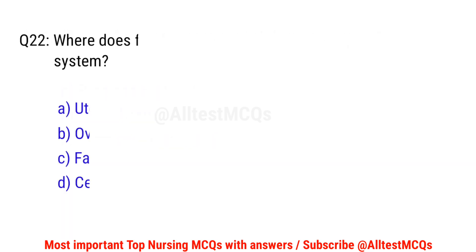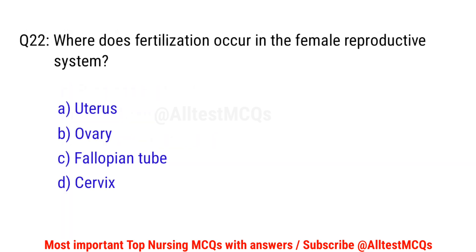Question number 22. Where does fertilization occur in the female reproductive system? The correct option is C: Fallopian tube.